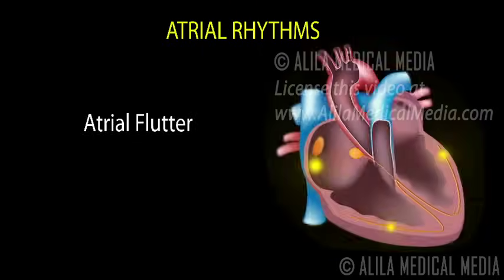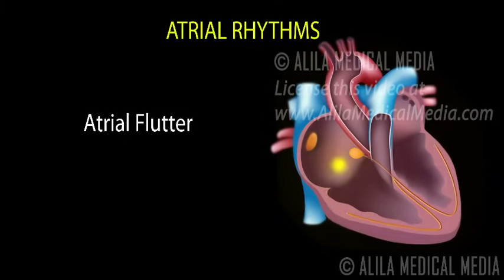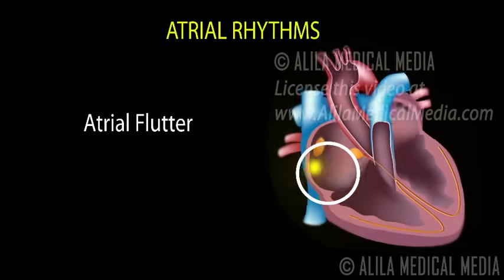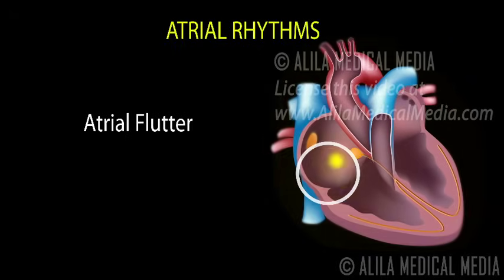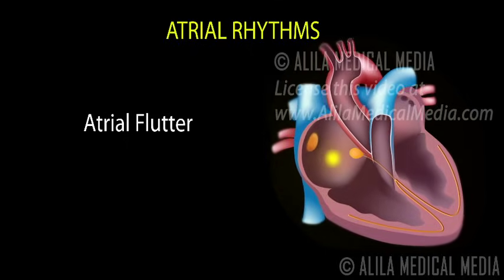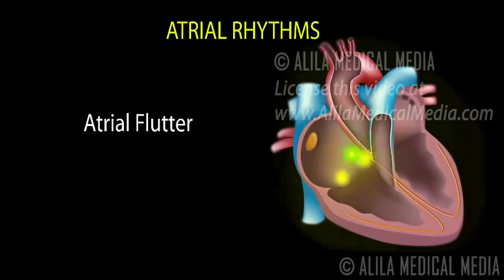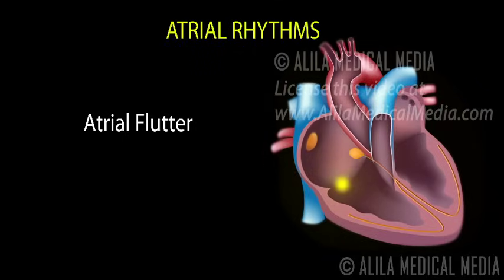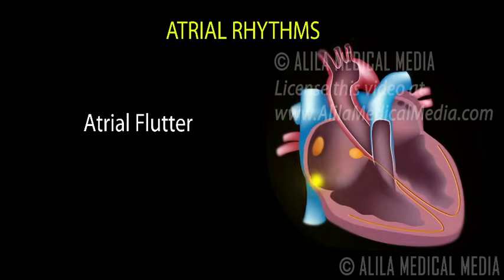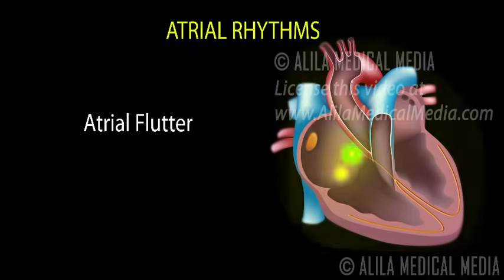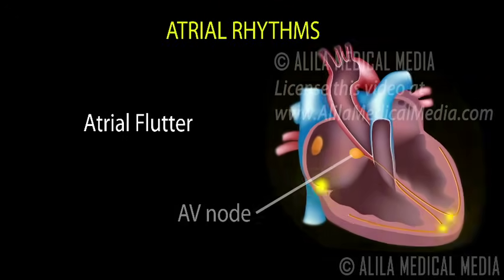Atrial flutter, or AFlutter, is caused by an electrical impulse that travels around in a localized self-perpetuating loop, most commonly located in the right atrium. This is called a reentrant pathway. For each cycle around the loop, there is one contraction of the atria. The atrial rate is regular and rapid, between 250 and 400 beats per minute. Ventricular rate, or heart rate, however, is slower, thanks to the refractory properties of the AV node.